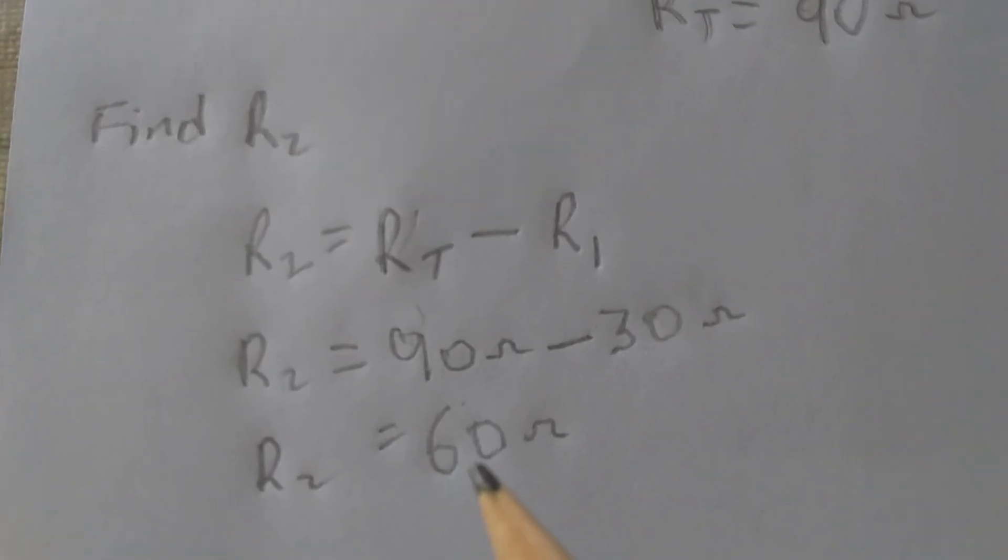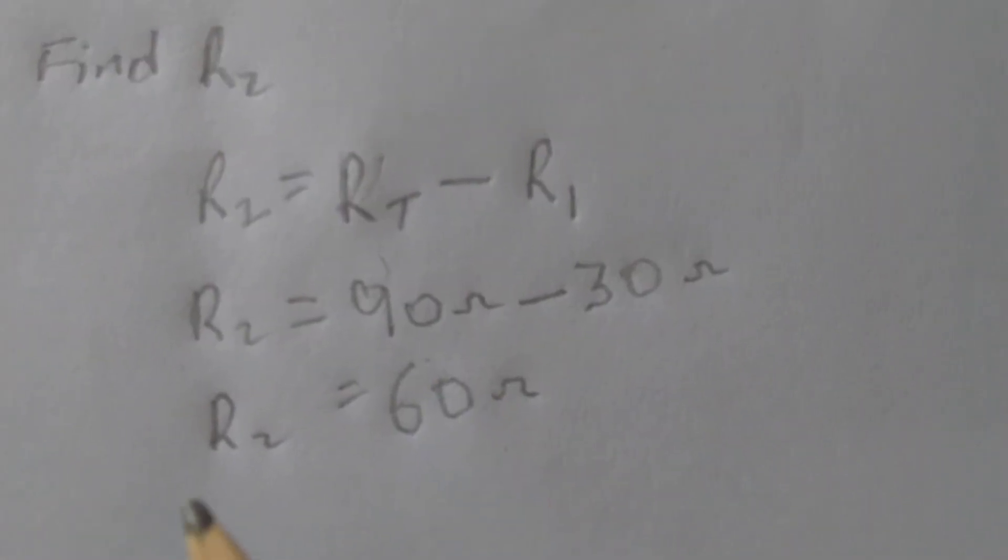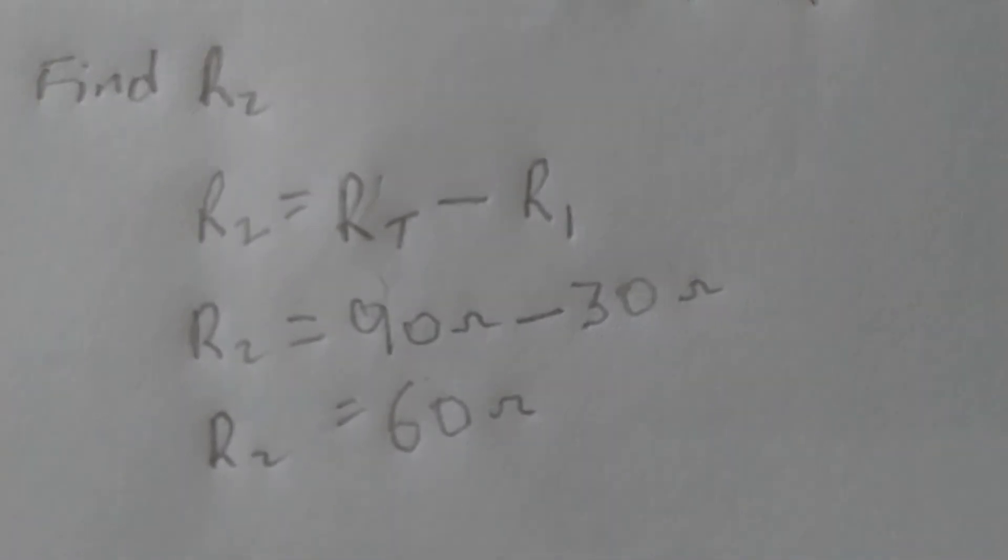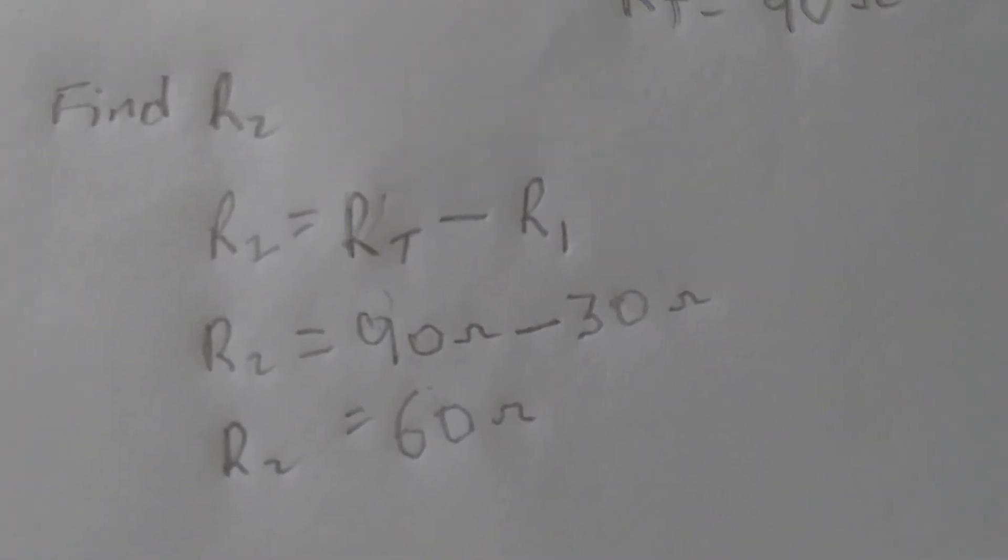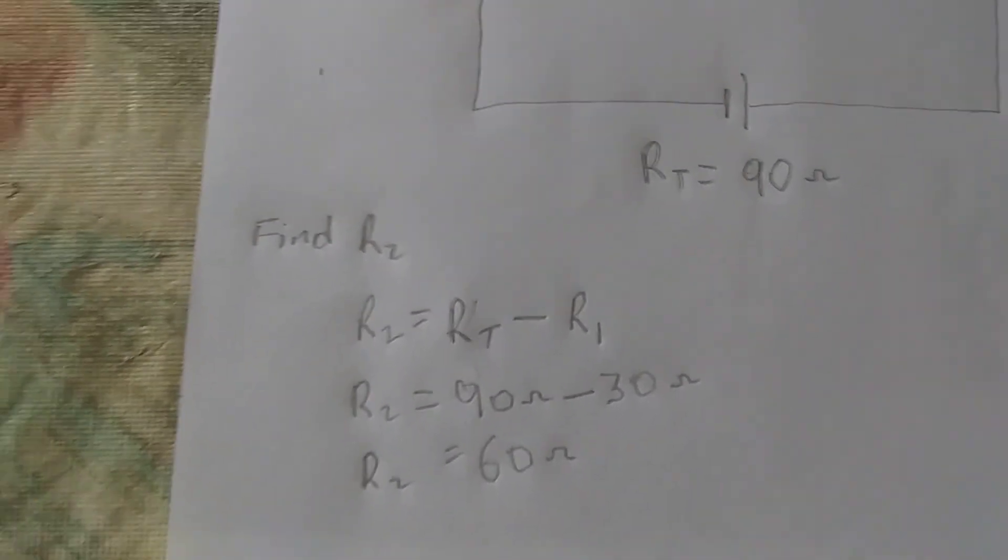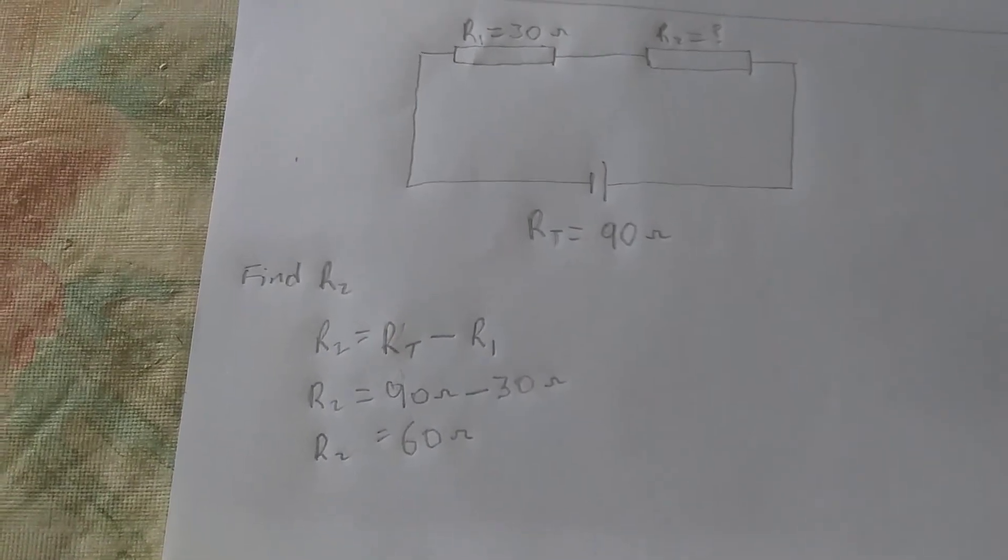So we have R2 is equal to 90, which is RT, minus R1, which is 30. And when we do that we end up with 60 ohms. So R2 is equal to 60 ohms. Hopefully this is of help to you. Thank you for watching, please subscribe, have yourself a nice day.